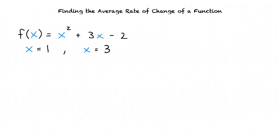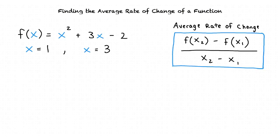To solve this problem we must use the equation for average rate of change. Average rate of change is defined as f of x2 minus f of x1 divided by x2 minus x1.